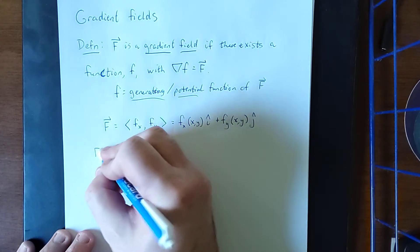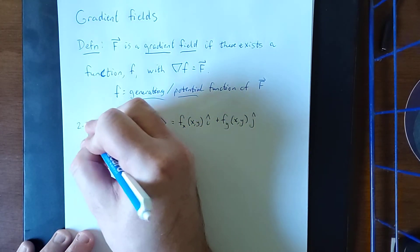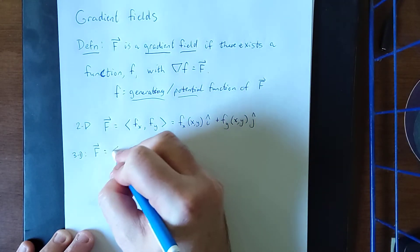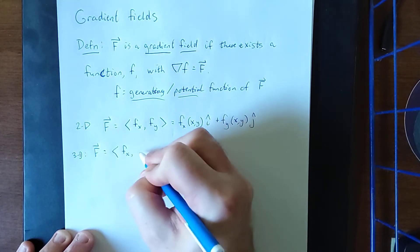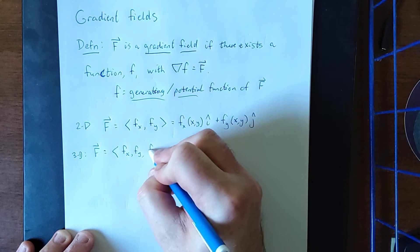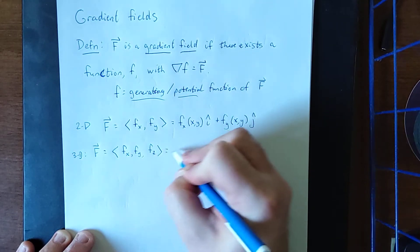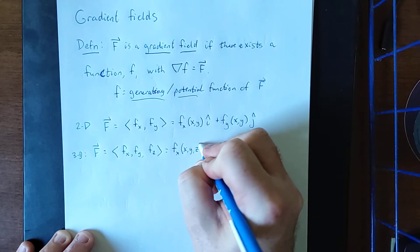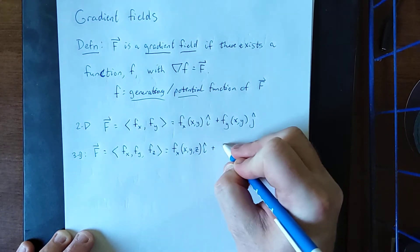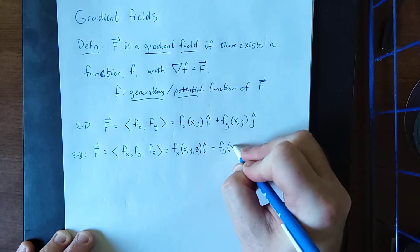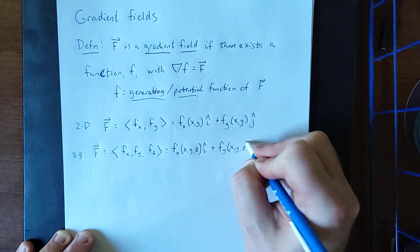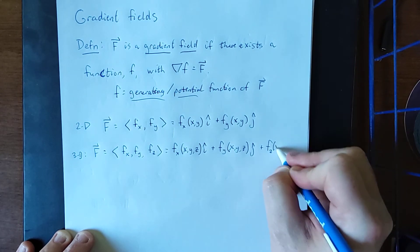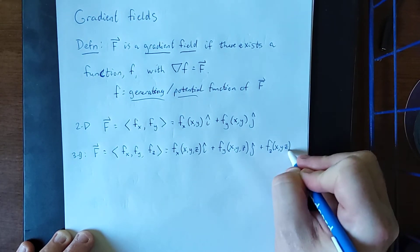Now in three dimensions, capital F would be equal to the partial derivative of f with respect to x, the partial derivative of f with respect to y, and the partial derivative of f with respect to z. So all three component functions are functions of x, y, and z, and they are all partial derivatives of your generating function.